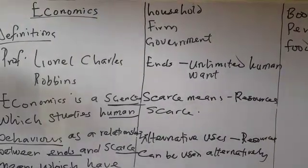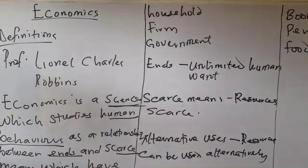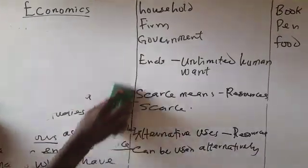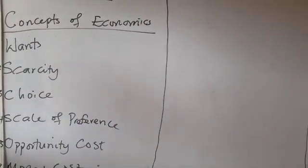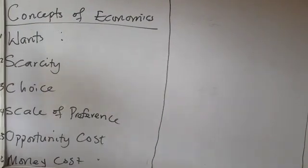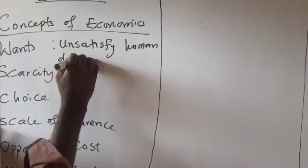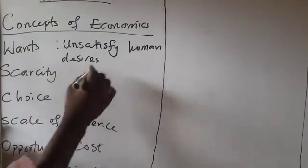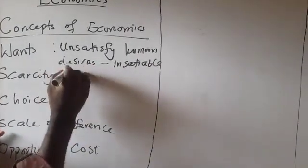These concepts we are talking about will explain more on how people actually make decisions or how they make use of their resources based on the unlimited wants. So looking at the concepts of economics, some of those things that we have discussed earlier in the definition will also be discussed here. The first one we have here is wants. When we say wants, wants simply means unsatisfied human desires. Unsatisfied human desires.